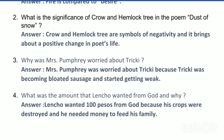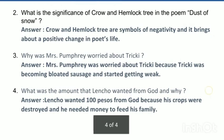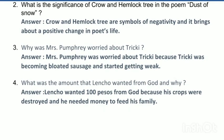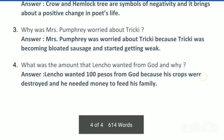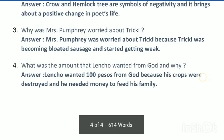The next question: why was Mrs. Pumphrey worried about Tricki? Because Tricki was becoming bloated like a sausage, getting lazier, and she thought he was getting weak — but actually he had just become lazy. What was the amount that Lencho wanted from God, and why? He wanted 100 pesos because his crops were destroyed and he needed money to feed his family.